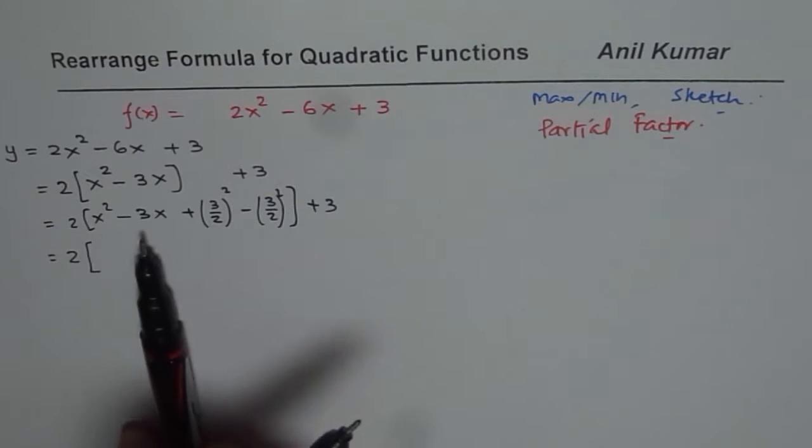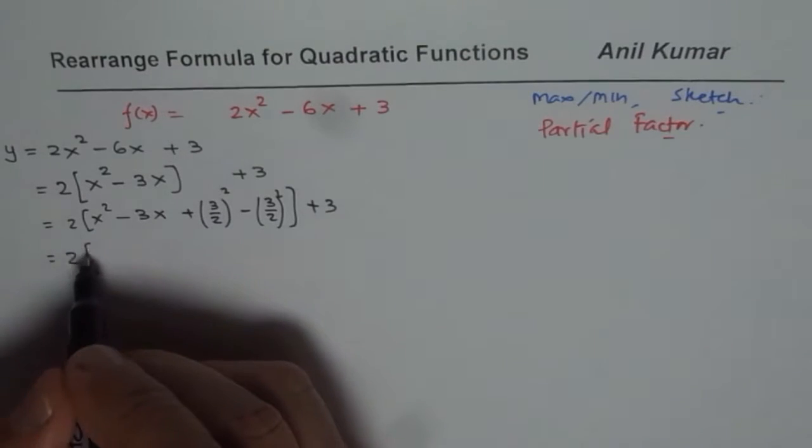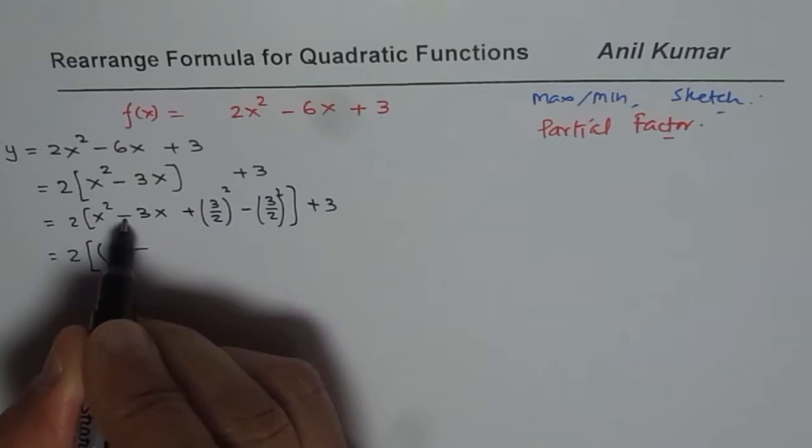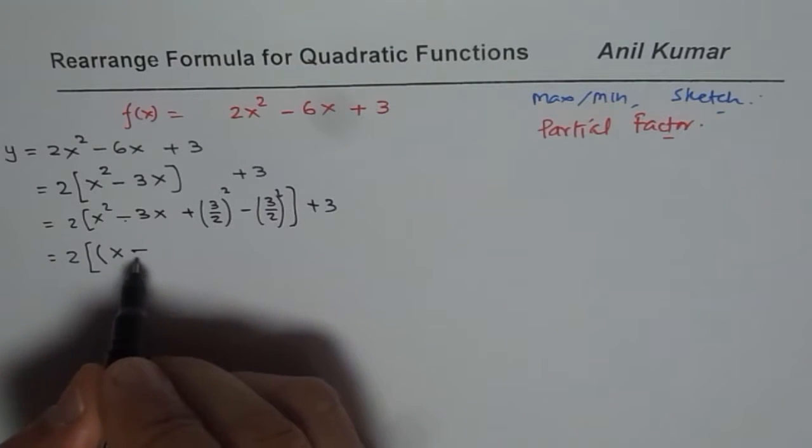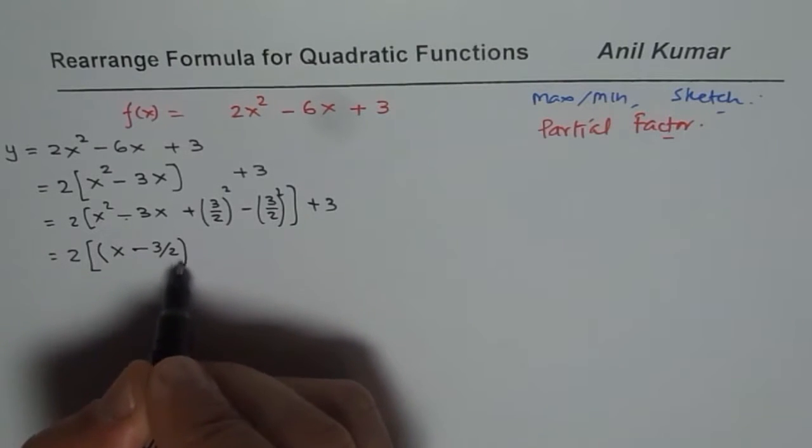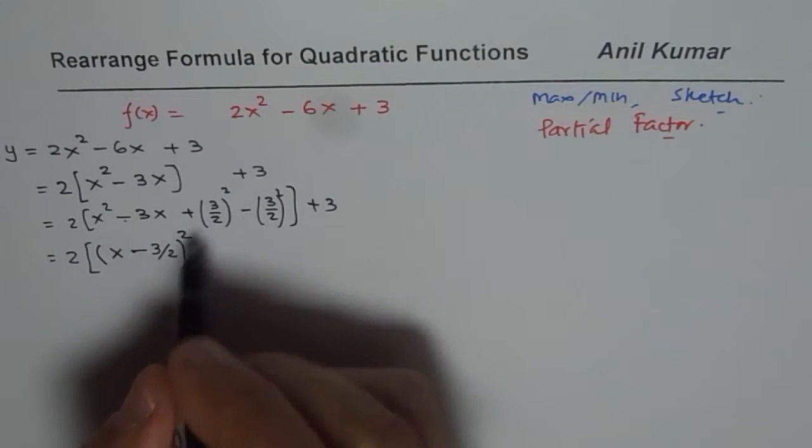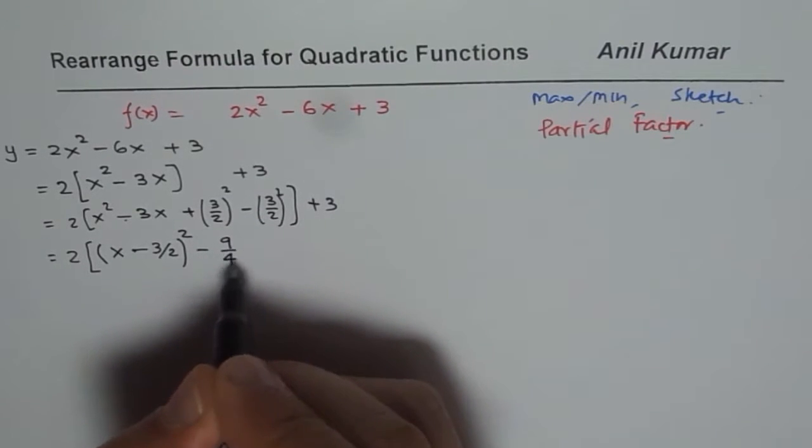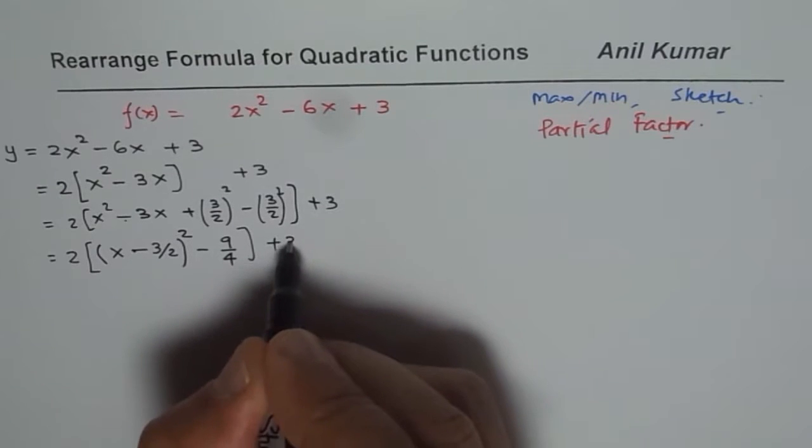Now continue this simplification. What you notice is that the first 3 terms form a perfect square. Take x from here, the negative sign, whatever it is, in this case it is negative. And then that number, which is 3 over 2, and square it. Now square the negative 3 over 2 whole square. You get 9 over 4 plus 3.